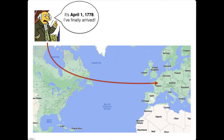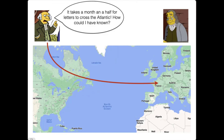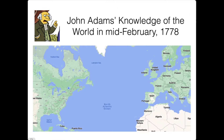And on April 1st, 1778, he finally arrives in Paris. Perhaps it's fitting that he arrived on April Fools' Day, because the joke was on him. Benjamin Franklin says, 'We already entered an alliance on February 6th—that was 11 days before you left Boston. Why did you come?' Well, John Adams says, 'It takes a month and a half for the letters to cross the Atlantic. How could I have known?'